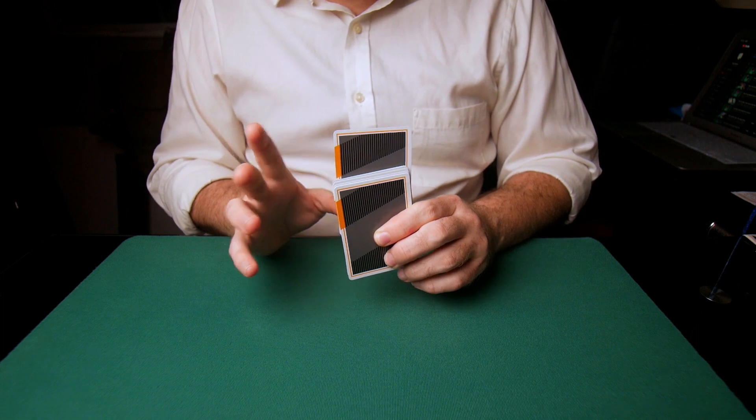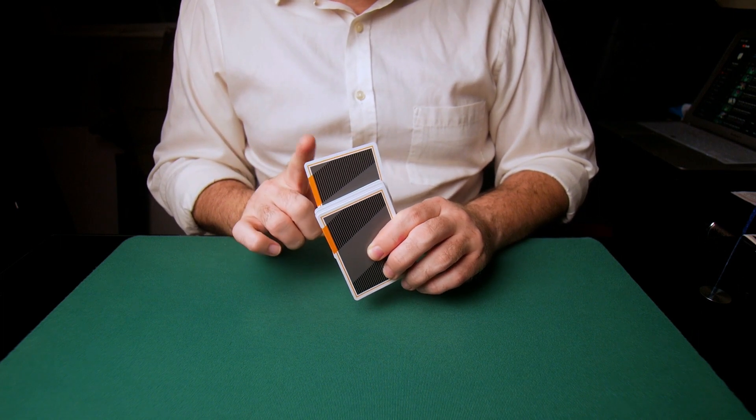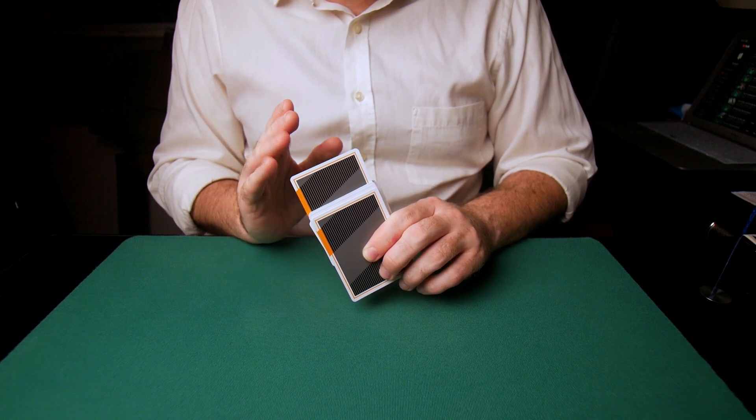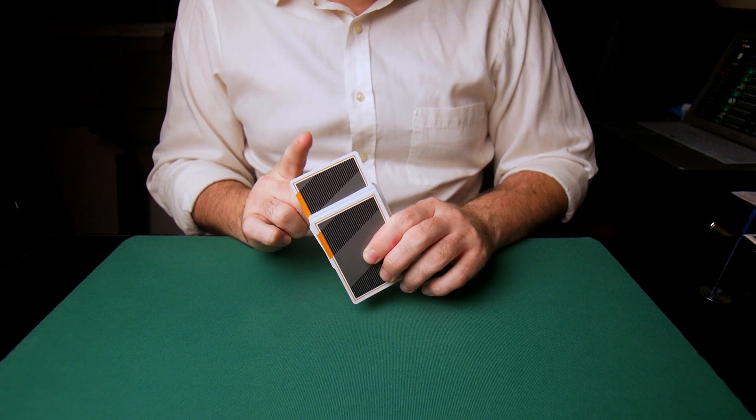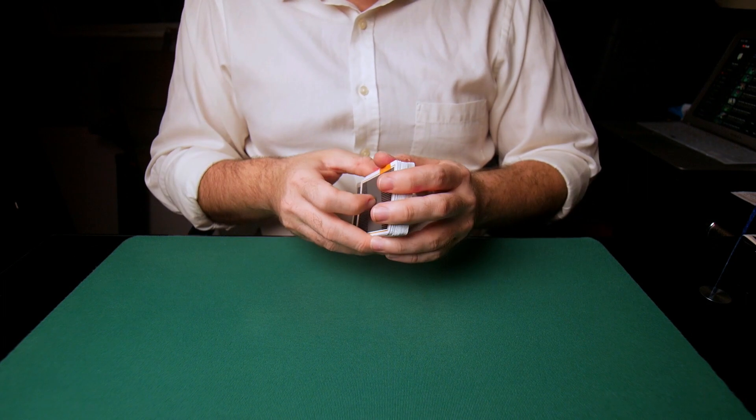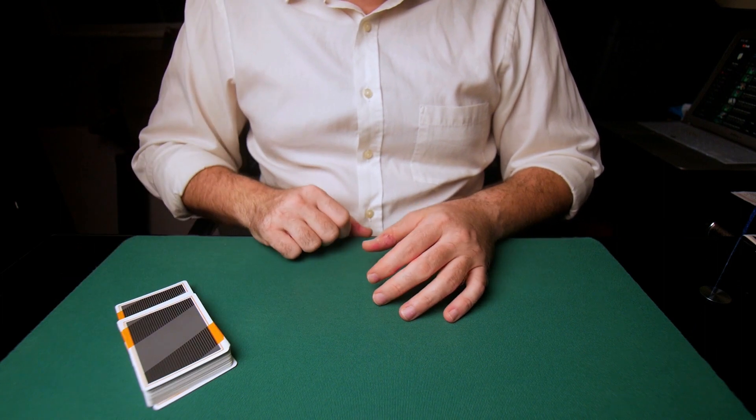Now, do understand that this is for explanation purposes. You never want to have a jog be this big. Never. This is huge. You square everything up, and you pass it to your partner.